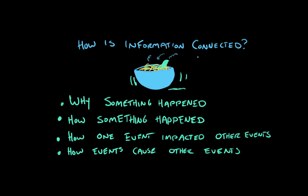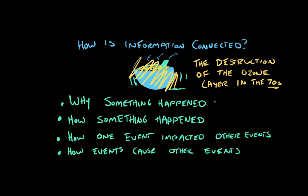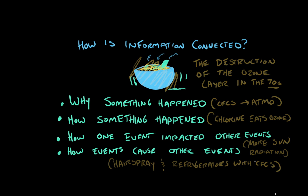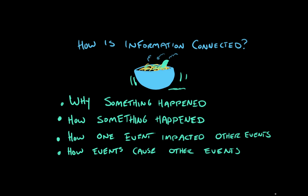So let's go back to our pasta bowl framework and replace the pasta with the destruction of the ozone layer in the 1970s. Why did it happen? CFCs got into the atmosphere. How did it happen? When CFCs get hit by solar radiation, they turn into chlorine, and the chlorine eats the ozone layer. What is the impact? More exposure to solar radiation. And what caused this to happen? The use of CFCs in hairspray and refrigerators. When making connections in a scientific text, ask yourself: why did something happen, how did it happen, what are the impacts, and does it cause anything else? Taking information from a text and plugging it into these questions is a great way to figure out how information relates to other information within the passage.